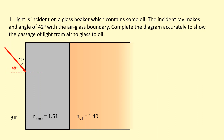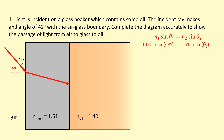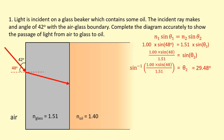Because we're going into a more dense medium, we know the light bends towards the normal, but we need to calculate the angle. Using Snell's law: n1 is the refractive index of air, so 1, and sin theta 1 is sin 48 degrees. N2 is the refractive index of glass, 1.51, and sin theta 2 is the angle of refraction we're trying to find. Rearranging and taking sine inverse, we get 29.48 degrees.